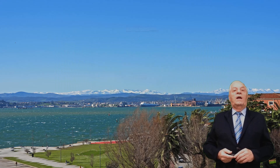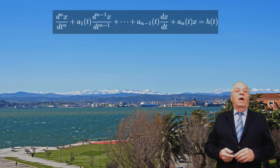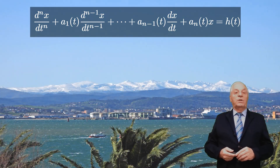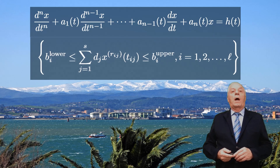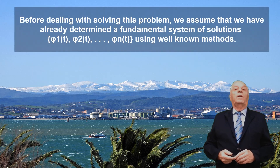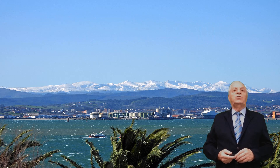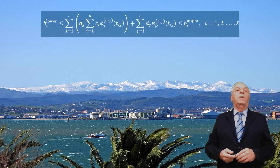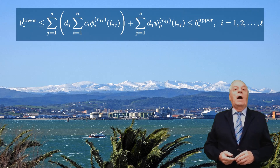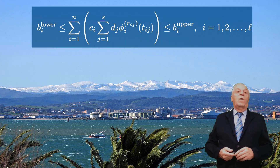We analyze what happens if we replace the point conditions in our problem by interval conditions. Our new problem is defined by a linear ODE and linear conditions of the type indicated, where b-lower and b-upper are the intervals replacing the constant values bi, and l does not need to equal n. Assuming a fundamental system of solutions phi1, phi2, ..., phin has already been determined, and substituting the general solution, we get a system of linear inequalities in the Ci's.